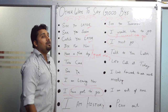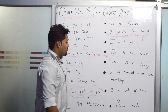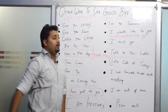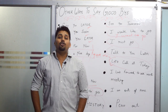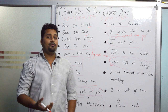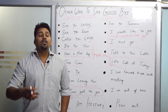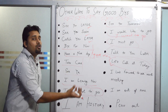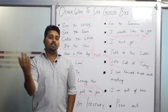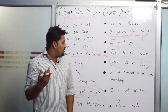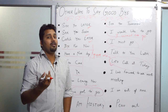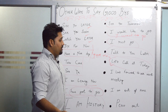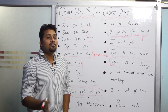Next is 'Let's call it today' — you use this at the end of the workday when you are closing your institute, office, coaching, or shop. In the evening when you go back home, you say to your colleagues and friends: 'Let's call it today,' meaning we are done for the day.